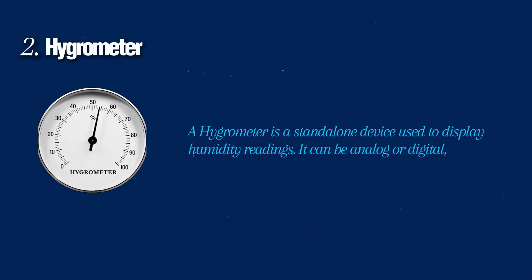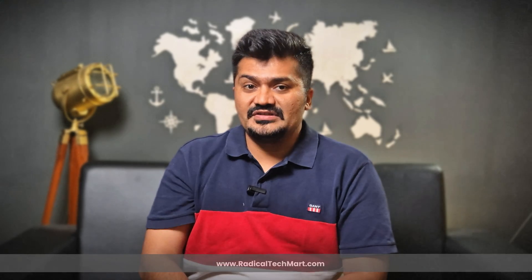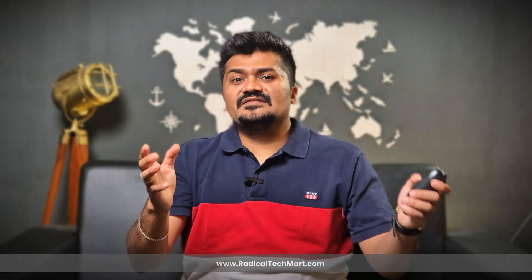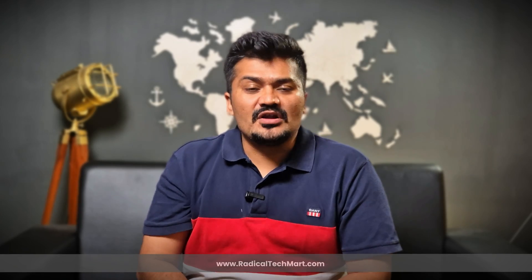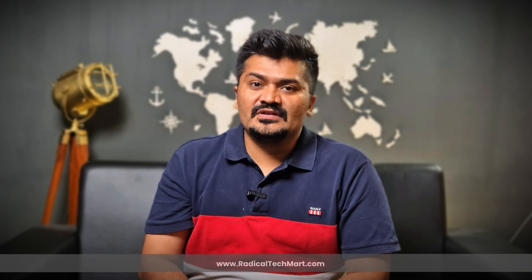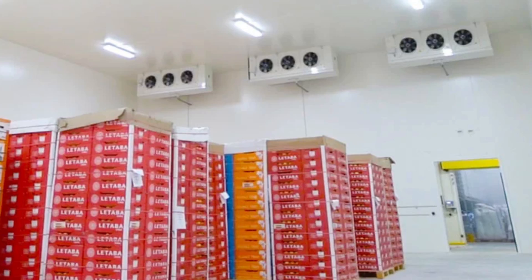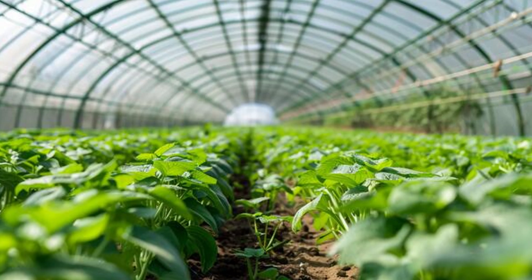A hygrometer is a standalone device used to display humidity readings. It can be analog or digital, and it is great for spot checking humidity in rooms, labs, warehouses, or greenhouses.